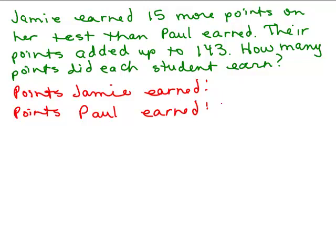Instead of using x, I'm going to use p to remind myself. P is going to stand for how much Paul earned, and therefore, since Jamie earned 15 more points, you would take p plus 15.